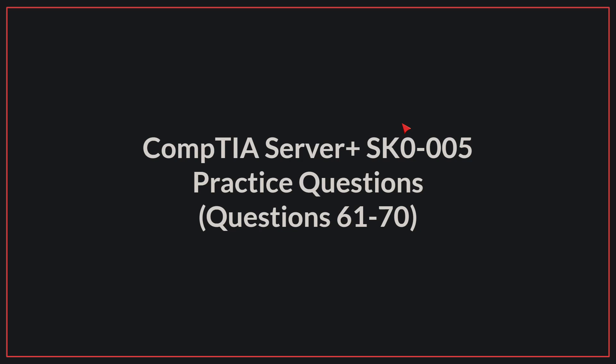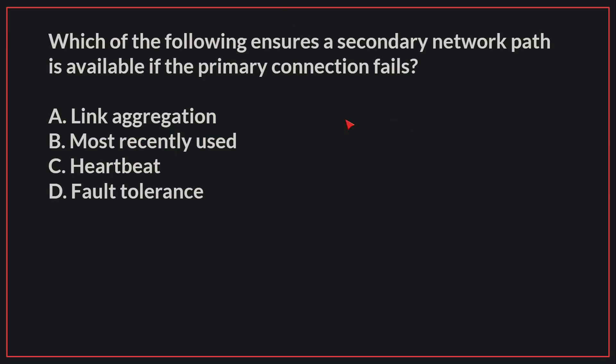Hello, today we'll be going through practice questions 61 and on for the CompTIA Server Plus exam. Let's begin. Which of the following ensures a secondary network path is available if the primary connection fails? The correct answer is D, fault tolerance.